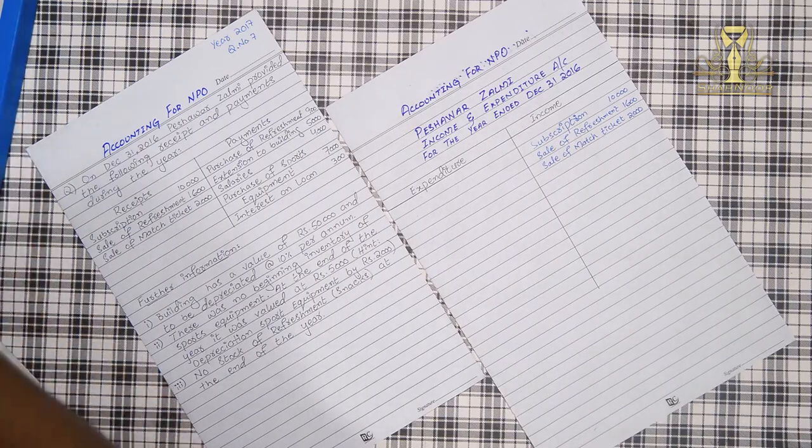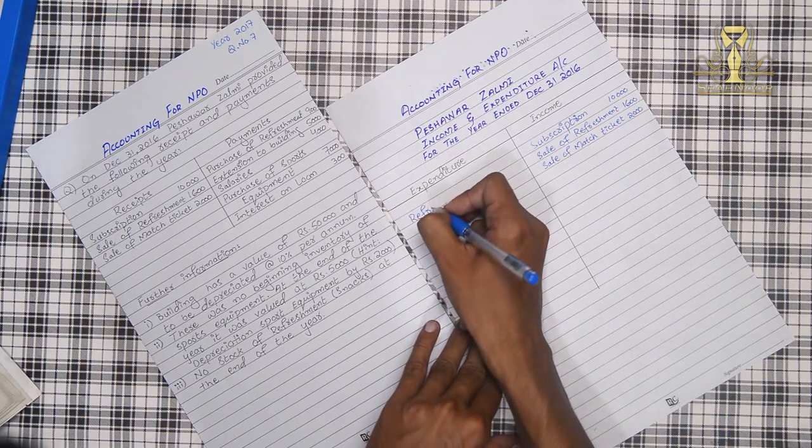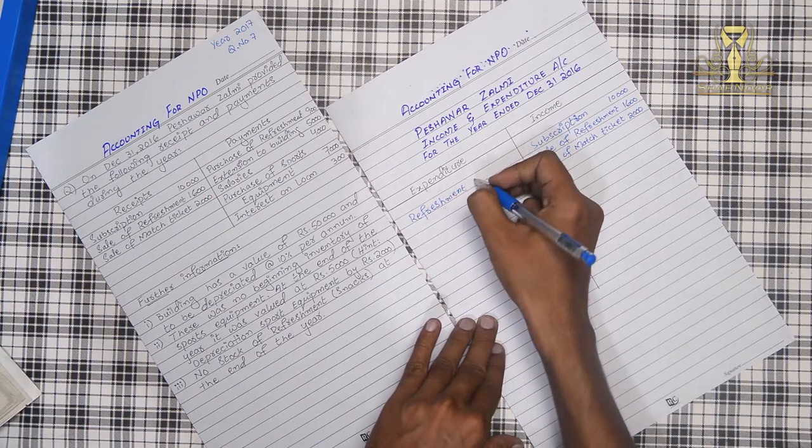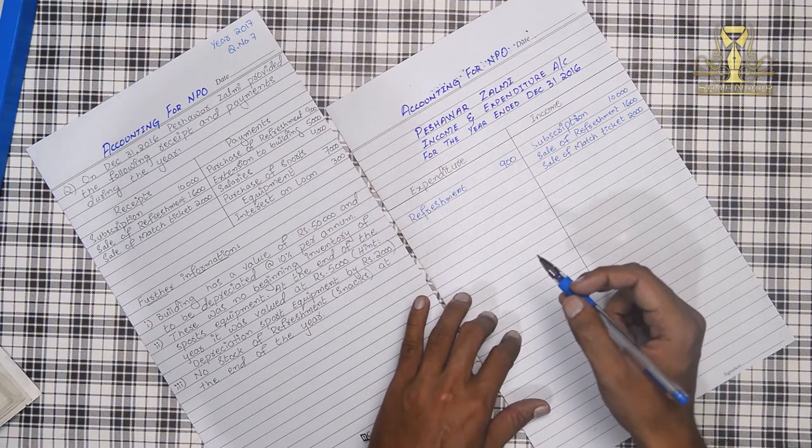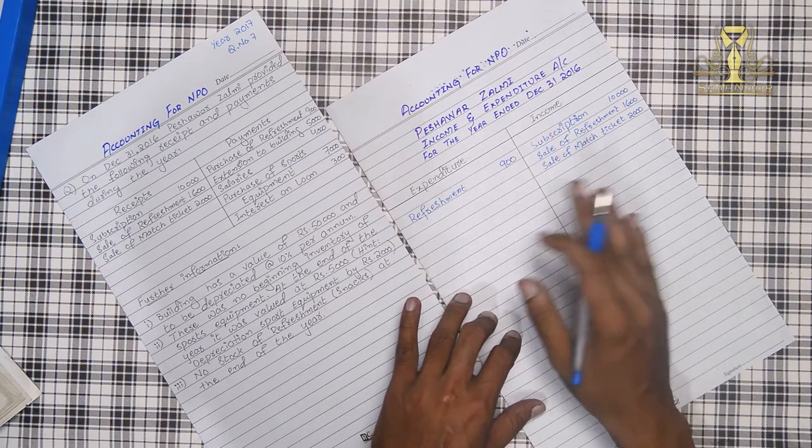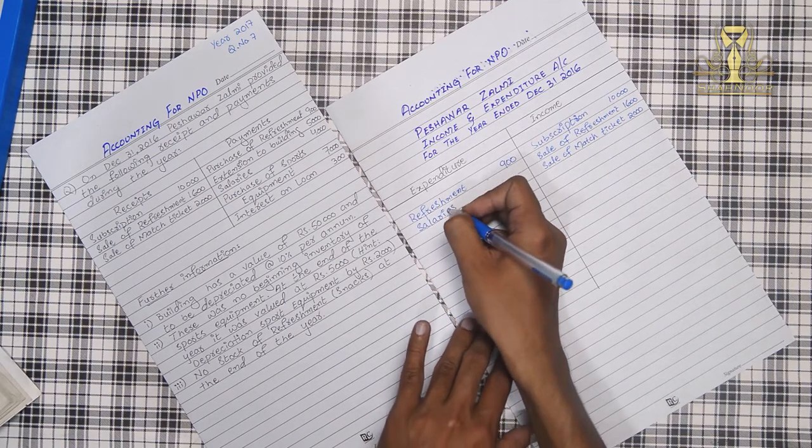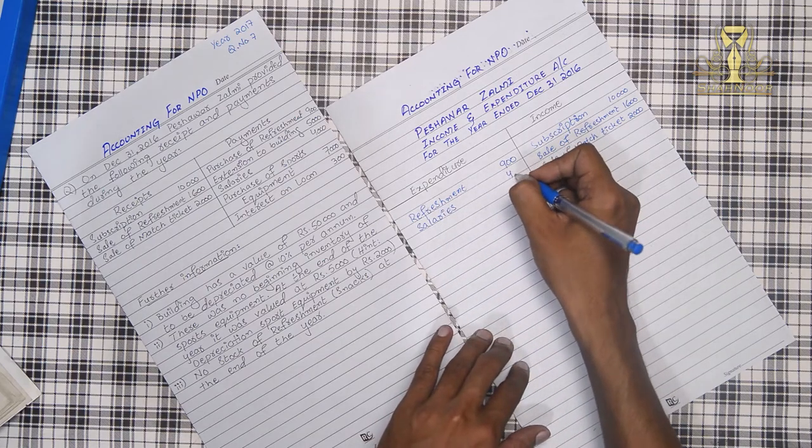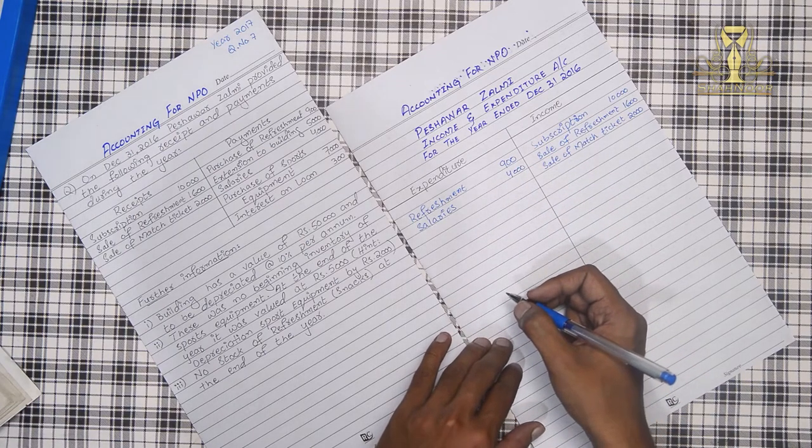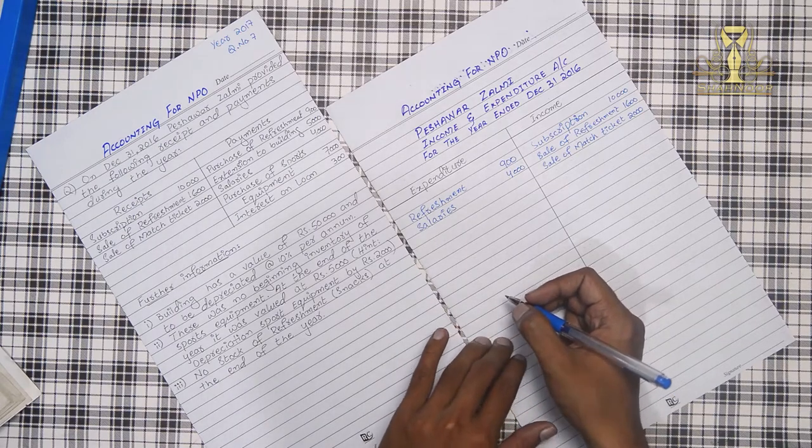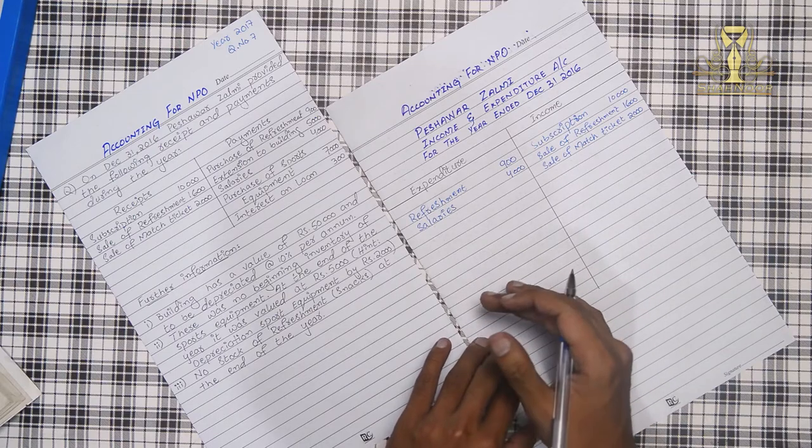Purchase of refreshment 9,000. In this case we will start with additional information. This is a balance sheet item. We will start with expenses. After that we will start with salaries. Third we will start with purchase of sports equipment which is 7,000, which is fixed asset.